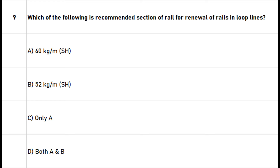Question 9: Which of the following is the recommended section of rail for renewal of rails in loop lines? A. 60 kilograms per meter. B. 52 kilograms per meter. C. Only A. D. Both A and B. The right answer is option D: Both A and B — 60 kg/m and 52 kg/m are used for renewal in loop lines.